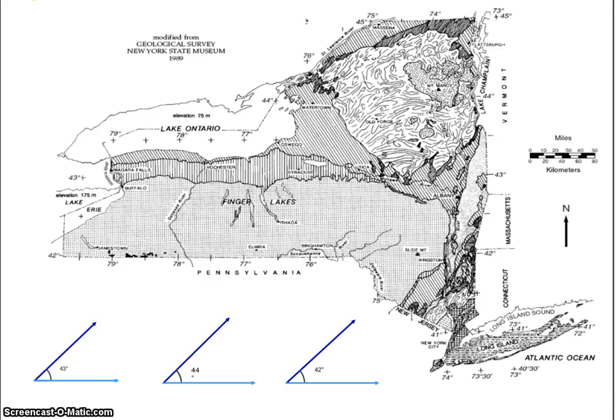Now in your reference table, you have the map of New York State, which of course has the latitudes on it and has some major cities. What you need to be able to do is figure out where Polaris would be depending on what city you were in. So let's go through a couple of these together.